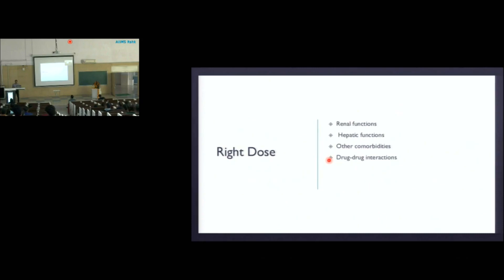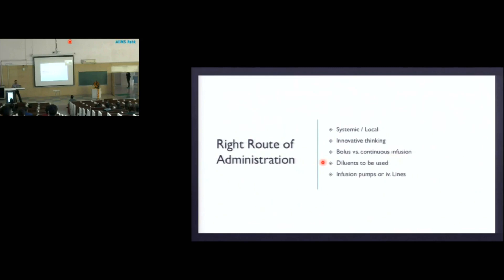Then comes the right dose — clinicians look at renal function, hepatic function, other comorbidities like CHF, QT prolongation, and drug-drug interactions that can modify the dose. From here, your actual role starts: route of administration. In the hospital setting it will primarily be IV for most antimicrobials, but some drugs can be given orally. The IV-to-oral switch — when it is happening, whether it is documented — is important.